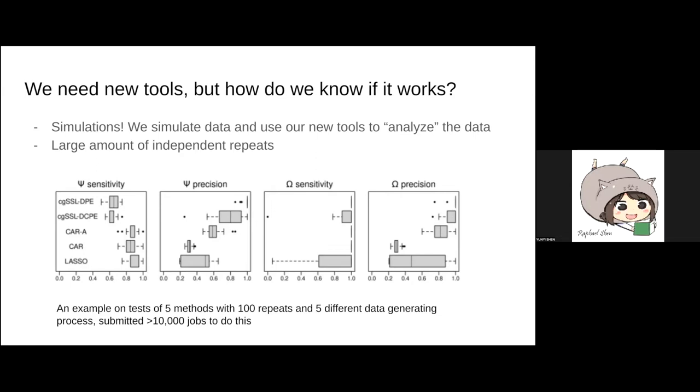That's where high throughput computing comes to play on my end. We do simulations. Suppose we can generate data, can our method tell the right story that we use to generate the data? Basically, we run simulations, we simulate data, and use our new tools to analyze the data we simulate. That requires a large amount of independent repeats. For instance, one setting in one simulation setting, we probably want to do 100 repeats. We probably have like 10, 20, 100 different settings, then we need to run 100 times 100 independent repeats. If we want something like 10-fold cross-validation, then we times 10 to that, and they're all sort of independent.